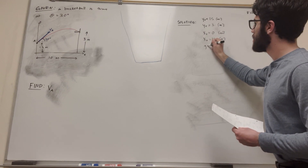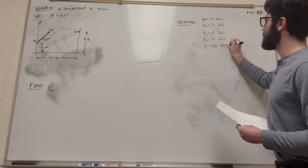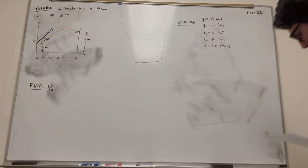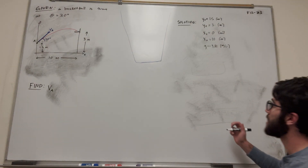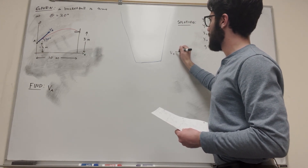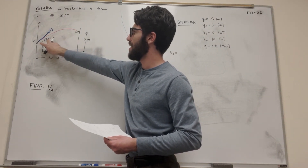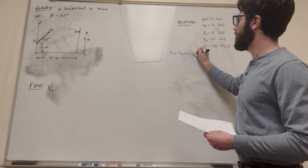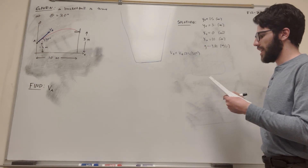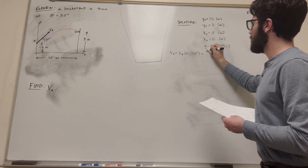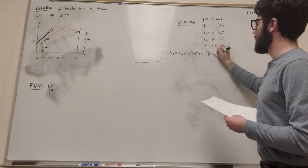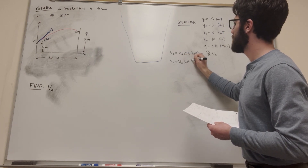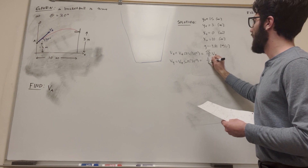We know gravity is negative 9.81 meters per second squared. Now for the individual components of velocity: velocity in the x direction uses cosine to lay it flat, so it's going to be va·cos(30°), which equals (√3/2)·va. Then the y component is va·sin(30°), which is just (1/2)·va.